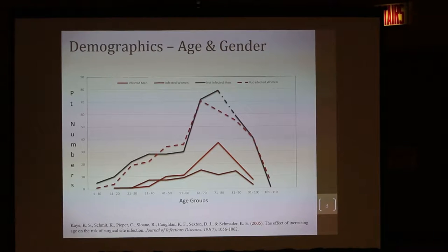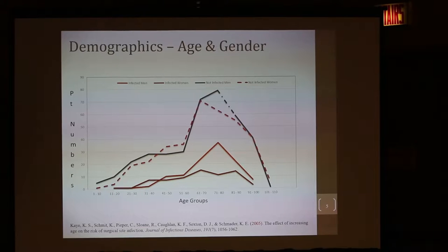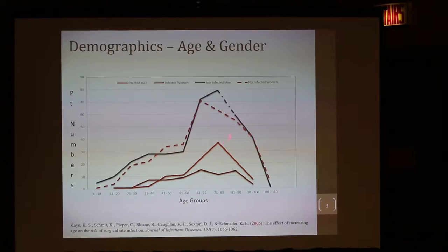The demographics: the age distribution was wide, starting from around five years till about 90 years. Before age 14 or 19, and after 94, there were no infections — patients did not have any surgical site infections. Isn't it interesting? And in previous publications, the peak infection was around 65, whereas in our given set, the infection peaked around 70. So these were the interesting findings from the given data.